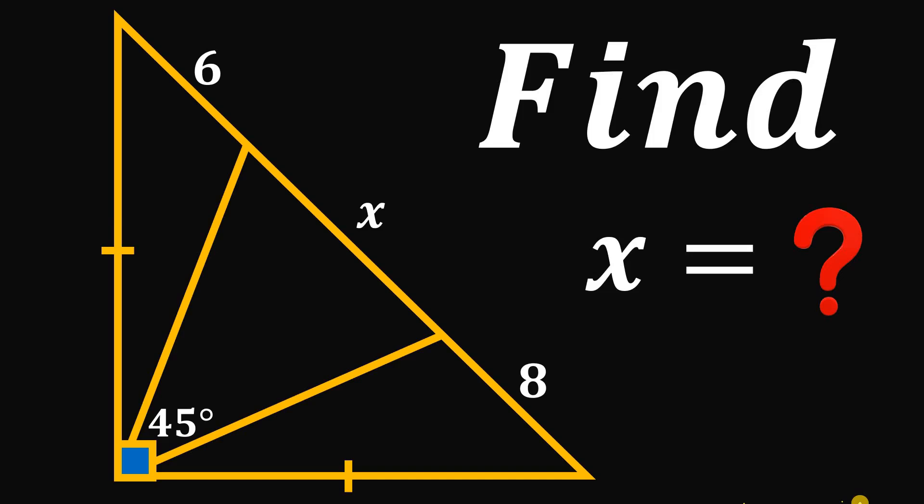This question is suggested by one of our followers. The figure contains an isosceles right triangle. Two segments are drawn where this angle measures 45 degrees. This length measures 6 units and this segment measures 8 units. The goal is to find the value of this segment x. You can pause this video if you want to give this problem a try.